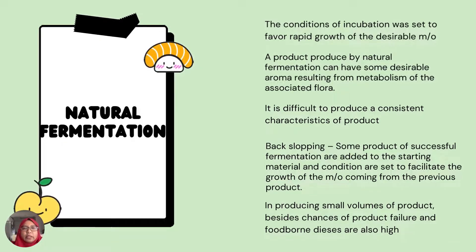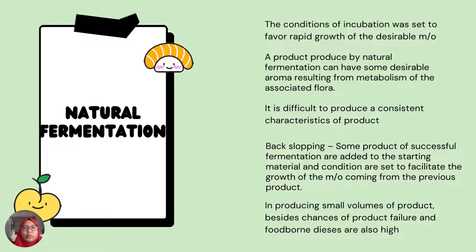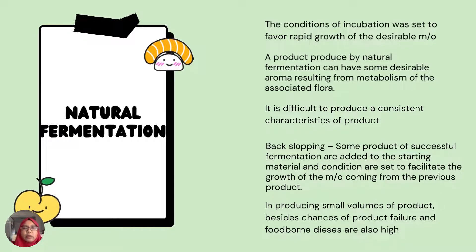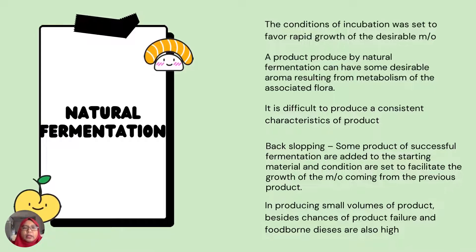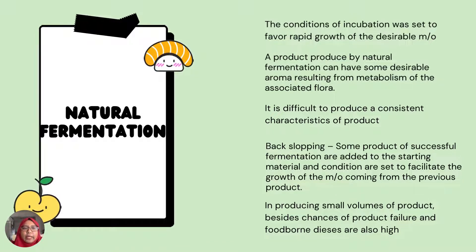For example, like kimchi and budu — they have a distinct smell. It is difficult to produce consistent product characteristics in natural fermentation because in the old days, not all products were the same, since we don't use the same starter culture. The condition is set so that desirable microorganisms will do the fermentation — it is different from controlled fermentation. It is difficult to produce consistent characteristics in natural fermentation.